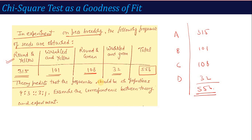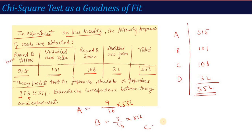Theory predicts the frequencies should be in the proportion 9:3:3:1. So category A should be 9/16 of total, because the total ratio is 9+3+3+1 = 16. That gives us 9/16 × 556. Category B should be 3/16 × 556, category C should be 3/16 × 556, and category D should be 1/16 × 556.